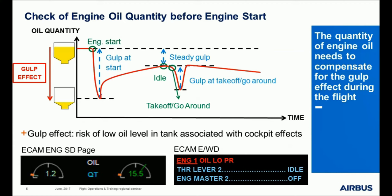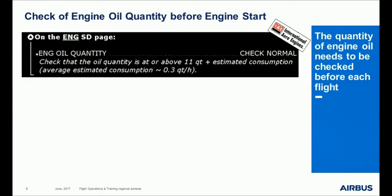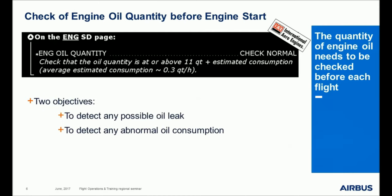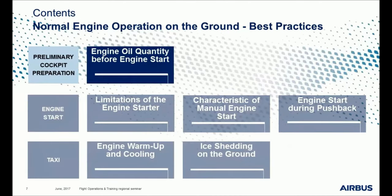If the oil quantity is not sufficiently high to compensate for the gulp effect, the oil level in the tank may drop too much and cockpit effects may be triggered — an oil advisory level on the engine SD page related to quantity or pressure, or even an ECAM alert related to low oil pressure. The quantity of engine oil needs to be checked before each flight: firstly to detect any leak between successive flights, and secondly to detect any abnormal oil consumption. The minimum engine oil quantity defined in the FCOM compensates for oil consumption and the gulp effect, and must be checked before each flight.